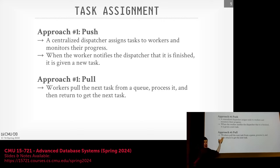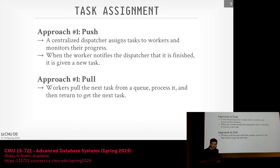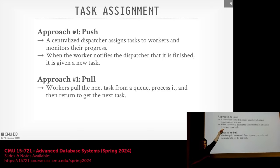The pull-based approach — which is the better approach that everyone uses — has a scheduler component maintaining a queue of all possible tasks that could be executed, with metadata about what data they're trying to access and where it's located. Workers, when they need something to do, come to this queue and pull the next task. This is easier because it requires less coordination and less maintenance of state about where each worker is in its computation. It's a la carte — workers can come pull things off when they're ready.